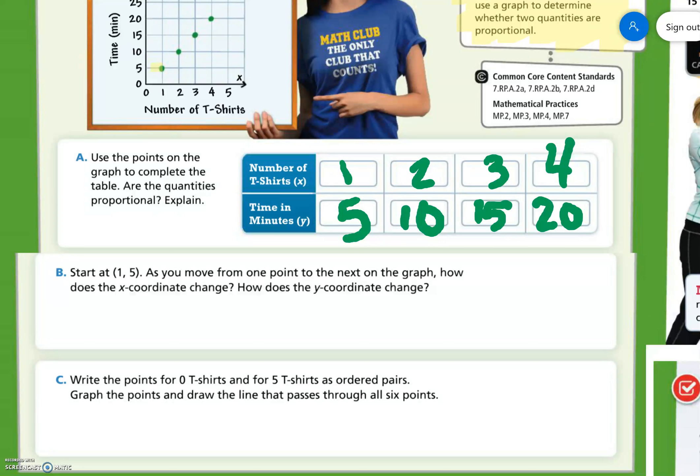Okay, so let's see. To see if they're proportional, remember we do y divided by x. 5 divided by 1 equals 5. This is the k value.